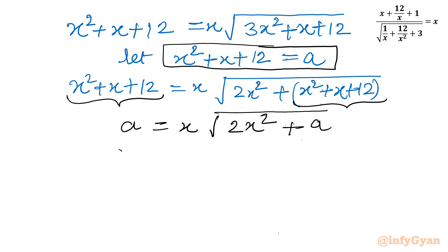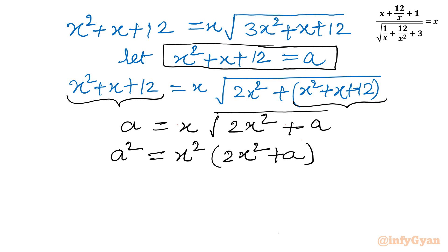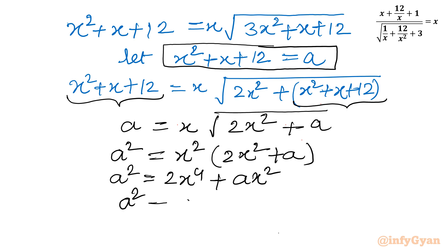Take squaring both sides. So I will write a squared equals x squared times (2x squared plus a). Expanding: a squared minus ax squared minus 2x to the power 4 equals 0.